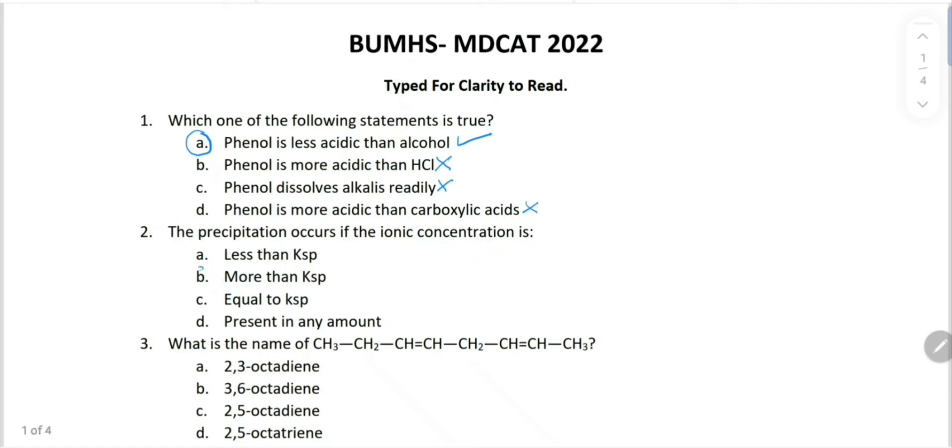What is the name of this compound? Let's see. First of all we'll do numbering. Select longest chain and number it from the side closest to the functional group. If we go from the right side: first, second, third, fourth, fifth, sixth, seventh, eight. So octa. There's a double bond at two and at five, which means 2,5-octadiene. 2,5-octadiene, choice C is correct.